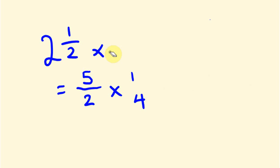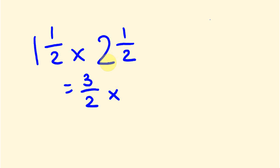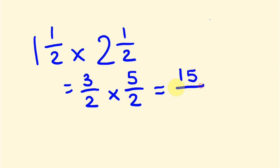Let's check another example. What about one and a half times two and a half? First we change these mixed numbers into improper fractions. One times two plus one is three, so three over two. Two times two plus one: two times two is four plus one is five, bottom number stays as two. Multiply straight across: three times five is fifteen, two times two is four. Then fifteen divided by four: four goes three times because three fours are twelve, with three left over. So the answer is three and three quarters.